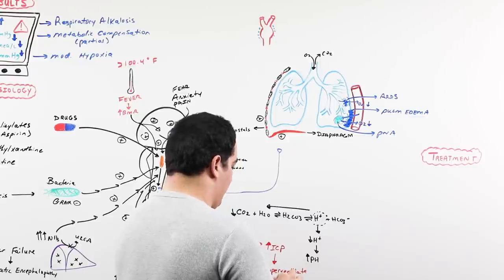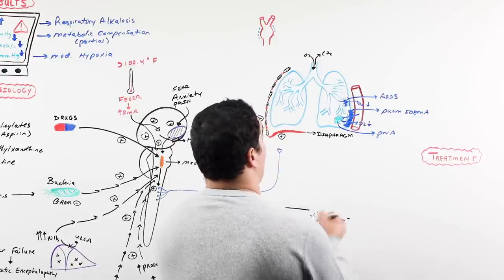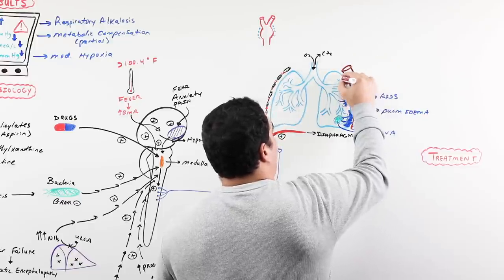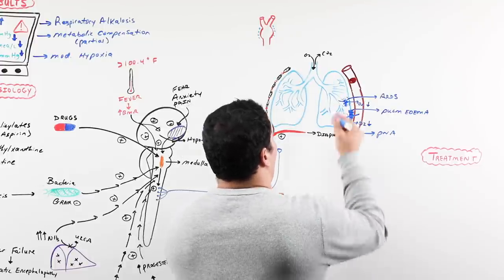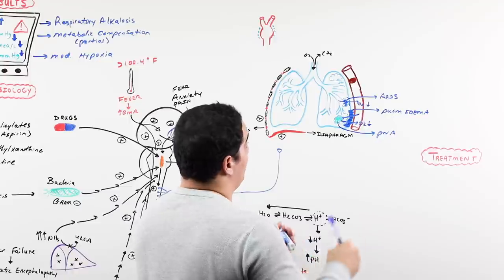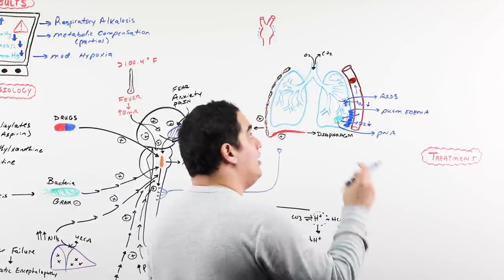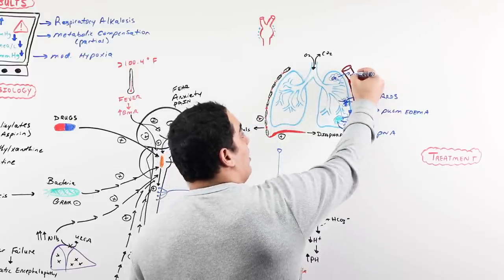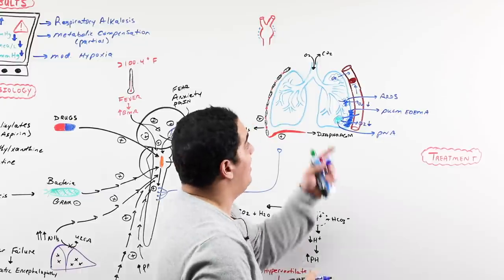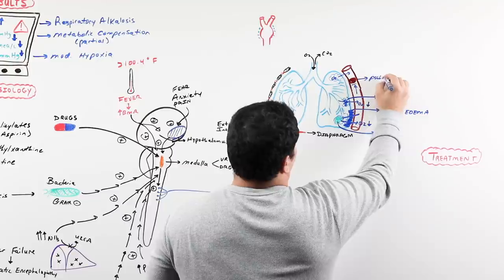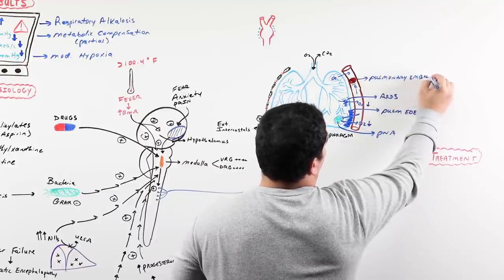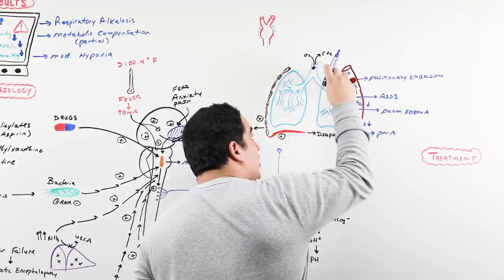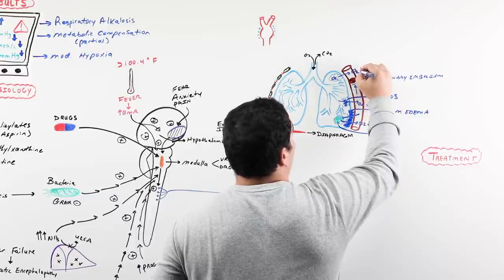The last situation is a clot — a pulmonary embolus blocking the blood vessel so blood can't reach the alveoli. Even though oxygen is present in the alveolus, it's not getting picked up by red blood cells because they're stopping proximal to the embolus. Whether it's fluid, infection, or a clot — all of these affect the movement of oxygen from the lungs to the blood, and the overall effect of all of this is hypoxia.